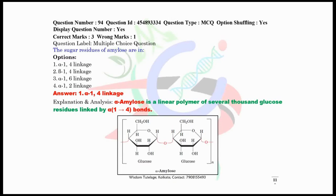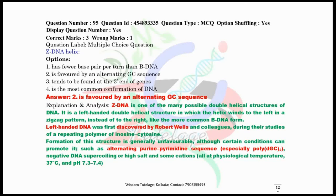Question number 94, the sugar residues of amylose are joined side by side by alpha 1,4 glycosidic linkage. Amylose is a linear polymer of several thousand glucose residues linked by alpha 1,4 glycosidic bonds. The correct answer is alpha 1,4 linkage. Now question number 95, Z-DNA helix is favored by an alternating GC sequence. I have given here the different types of information which are based on Z-DNA.